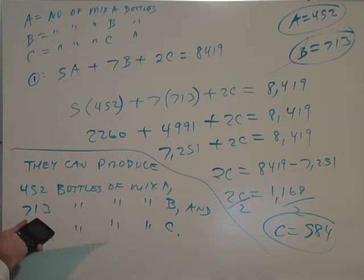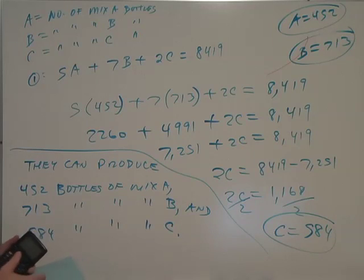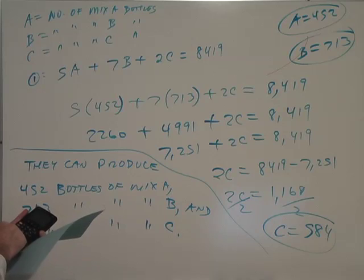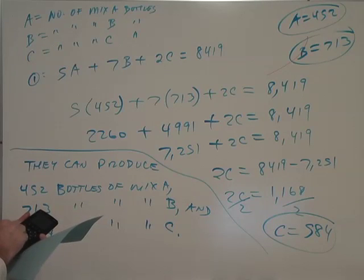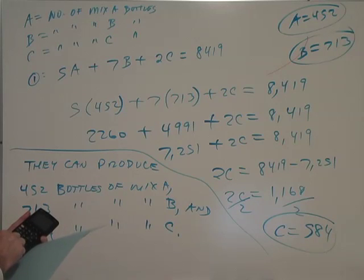There were five ounces per bottle in mix A of apple juice. So 5 times 452 is 2,260 ounces of apple juice in mix A. To that I add 713 bottles times the 7 ounces in mix B and add, let's see, 584 bottles times the 2 ounces in mix C.